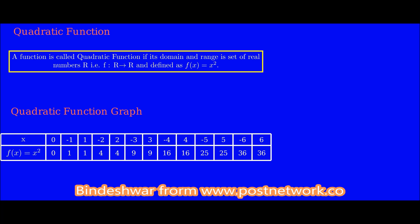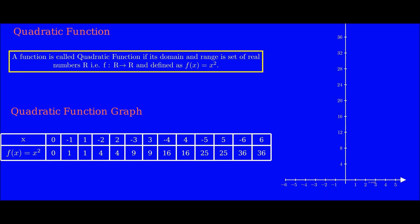To understand it better, let us plot this function in the coordinate plane. You can see that the values of x and f(x) are tabulated. The first value is (0, 0), which is the origin. For x equal to minus 1, f(x) is 1, and the coordinate formed would be (−1, 1), meaning for a value of minus 1, f(x) would be 1.